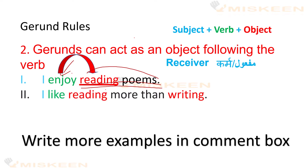Doosara sentence: I like reading more than writing — mujhe likhne se zaada parhna pasand hai. Here, like is our main verb. Reading and writing are our gerunds.